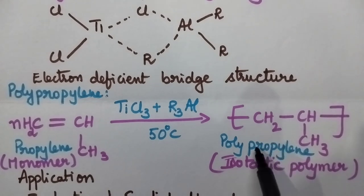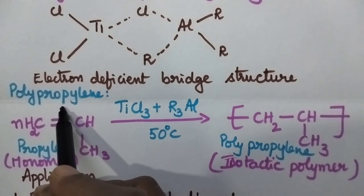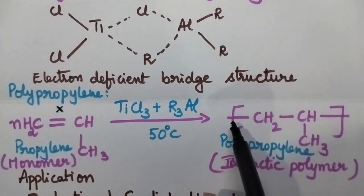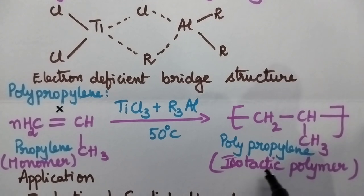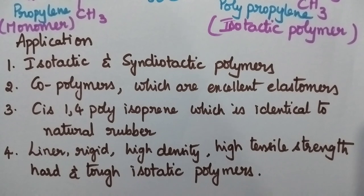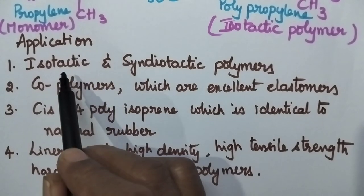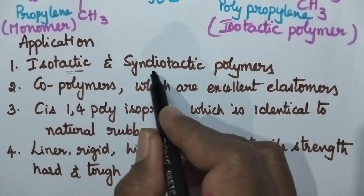So, while writing the structure of polypropylene, you just break the double bond and you just add the extension at the ends and results in the formation of isotactic polymers. Coordination polymerization is highly useful for the preparation of isotactic and syndiotactic polymers.